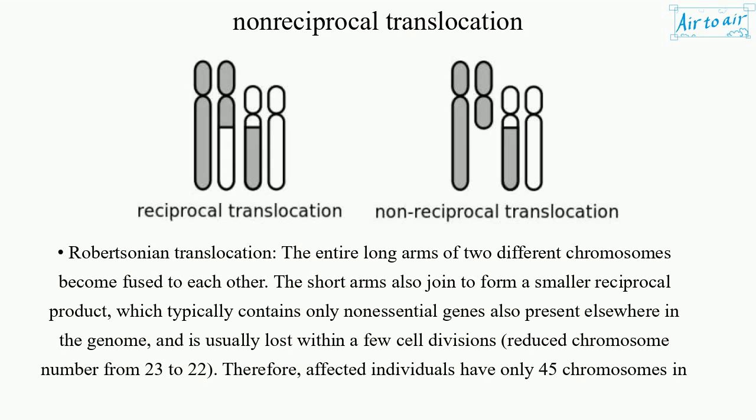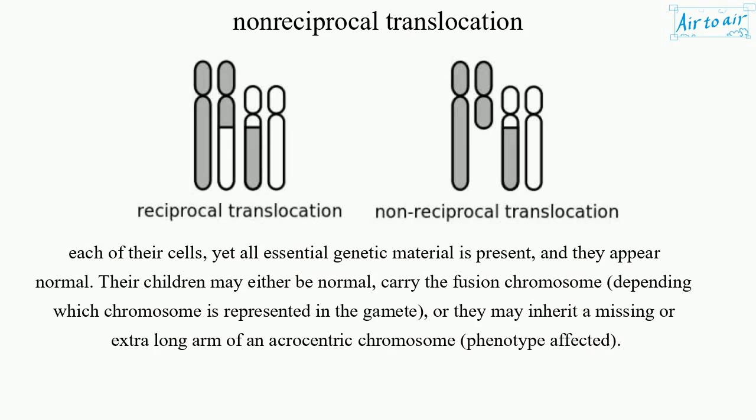In Robertsonian translocation, the short arms also join to form a smaller reciprocal product, which typically contains only non-essential genes also present elsewhere in the genome, and is usually lost within a few cell divisions, reducing chromosome number from 23 to 22. Therefore, affected individuals have only 45 chromosomes in each of their cells, yet all essential genetic material is present, and they appear normal.